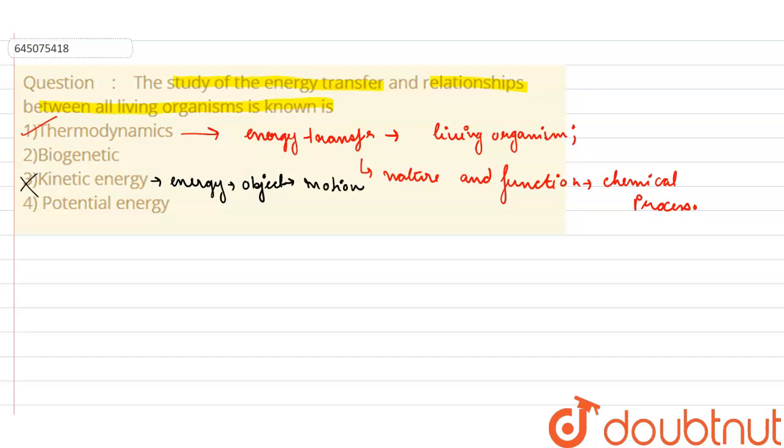Option 4 says potential energy. Potential energy is also an energy which is obtained by an object at a particular height. So this is also an incorrect option and number 2 is also incorrect.